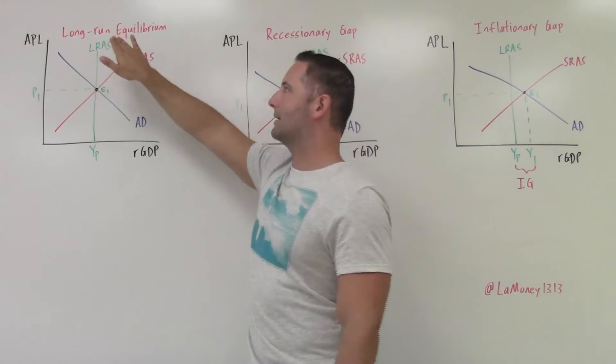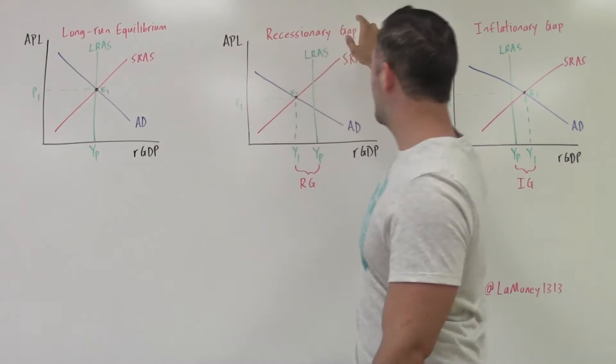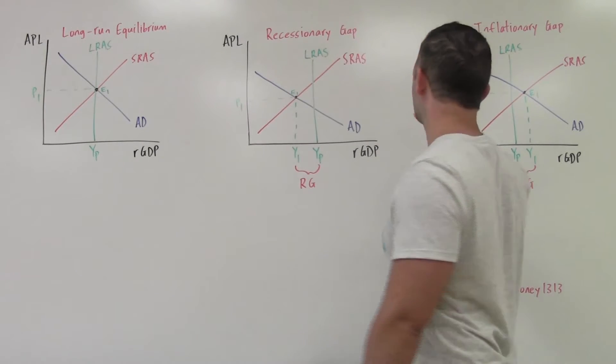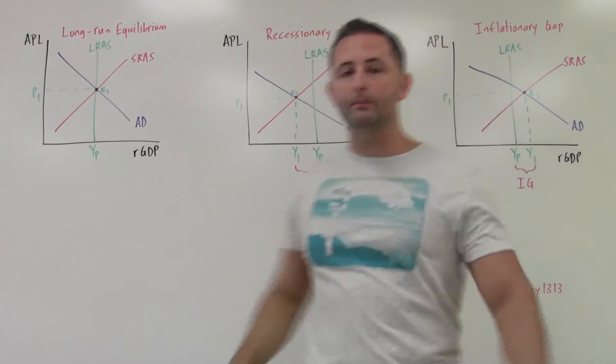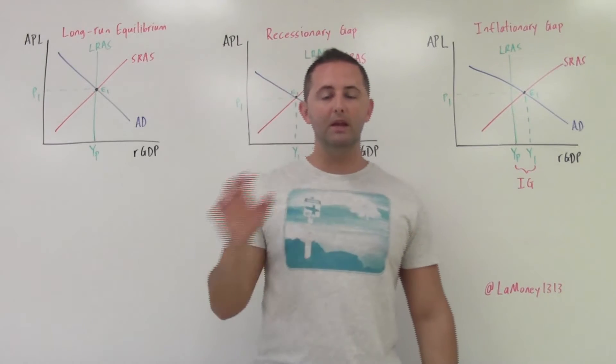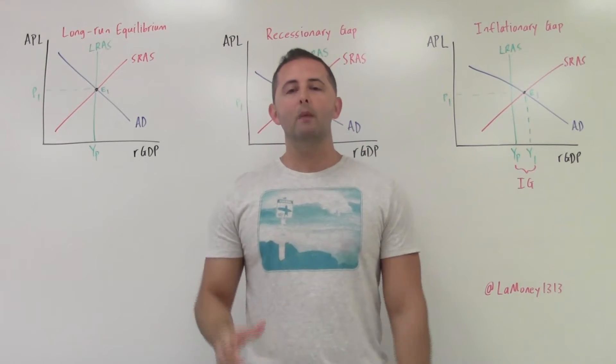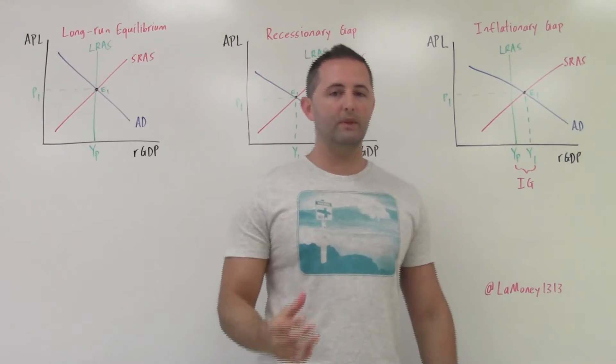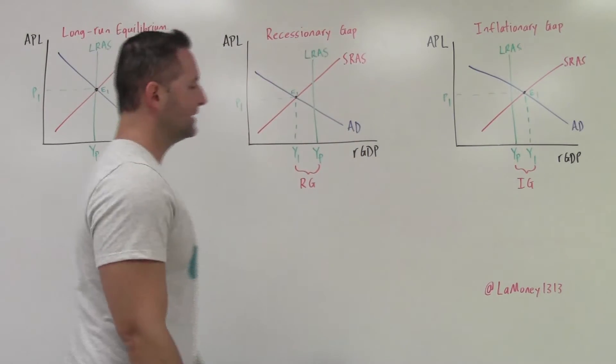So we have three different starting points here. We have an economy beginning in long-run equilibrium, an economy beginning in a recessionary gap, and an economy in an inflationary gap. And so really, I just want to describe each one of these three things. We can see it, but this is how you would start these models.